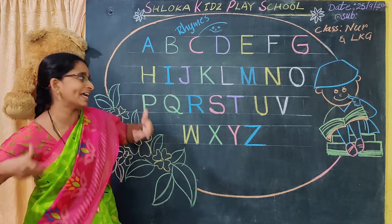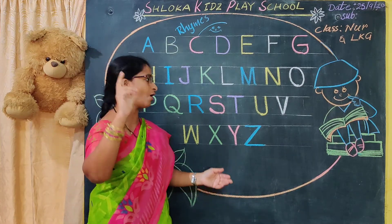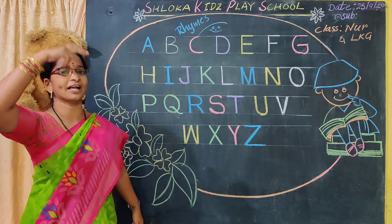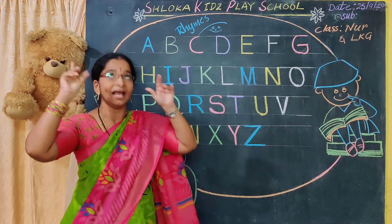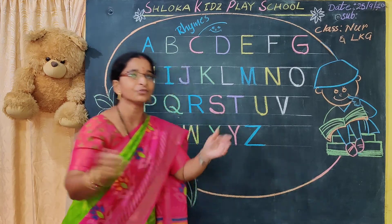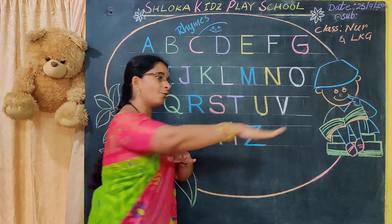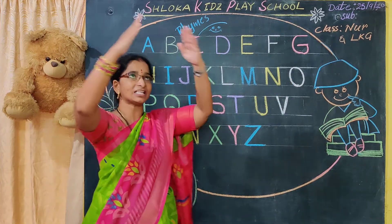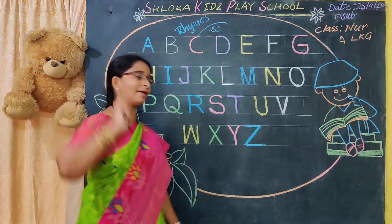M for monkey. N for nest. O for orange. P for parrot. Q for queen. R for rabbit. S for sun. T for train. U for umbrella. V for van. W for watch. X for Christmas tree. Y for yard. Z for zip.